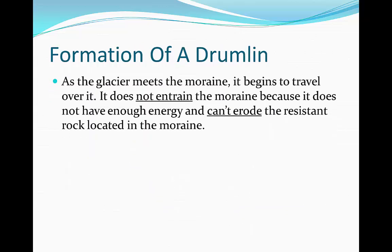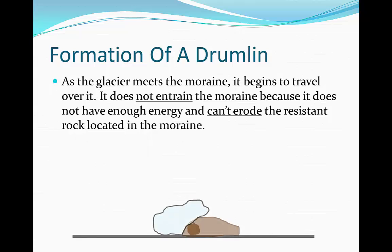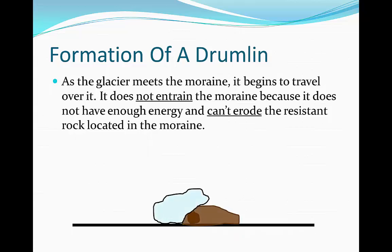The formation of a drumlin. As the glacier meets the moraine, it begins to travel over it. It doesn't entrain it, because it doesn't have enough energy, and can't erode it either, because there's resistant rock located inside the moraine. As the glacier begins to move over the moraine, it's not eroding it, not entraining it, and it's going to smooth it as it moves over. The resistant rock is there to prevent erosion.